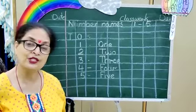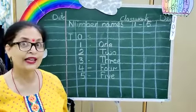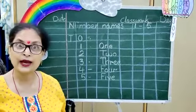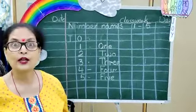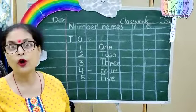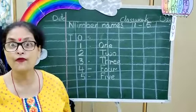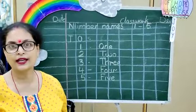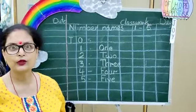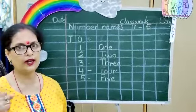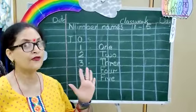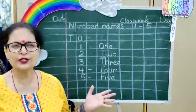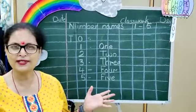Then Daddy, give me T, H, R, E, E — 3. And likewise, you ask Dadu, give me 4 — F, O, U, R — 4 things. And then you say, 'I have done F, I, V, E — 5!' So fun it is to do with the number names now.